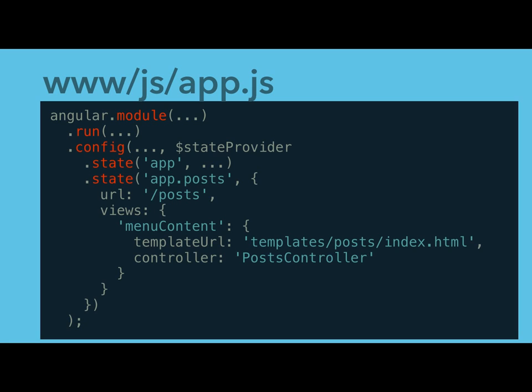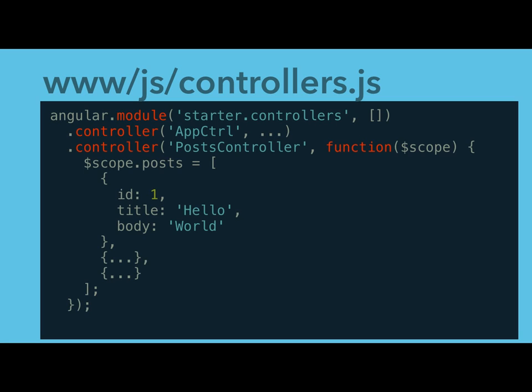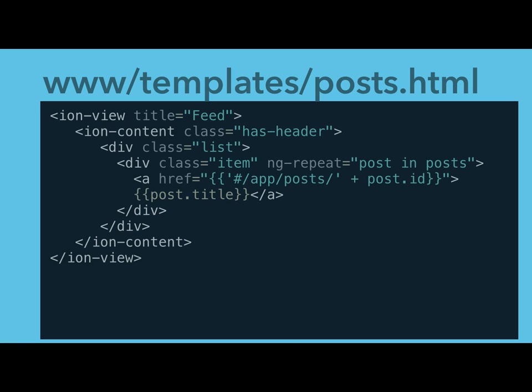In controllers, you define each controller and set data on `$scope` — the object that makes data accessible to the view. For example, a PostsController sets `scope.posts` to an array of post objects, each with an id, title, and body. The data could come from an API, local storage, or a local file. Once the controller populates scope, the view can access and display that data.